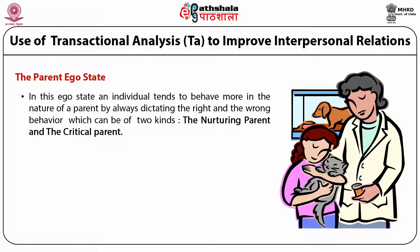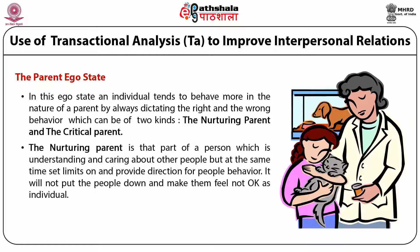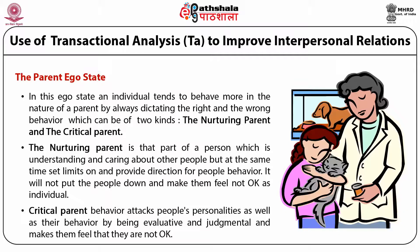In the parent ego state, the nurturing parent is that part of a person which is understanding and caring about other people, but at the same time sets limits on and provides direction for people's behavior. It will not put people down and make them feel not okay as individuals. On the other hand, a critical parent behavior attacks people's personalities as well as their behavior by being evaluative and judgmental, making them feel that they are not okay.